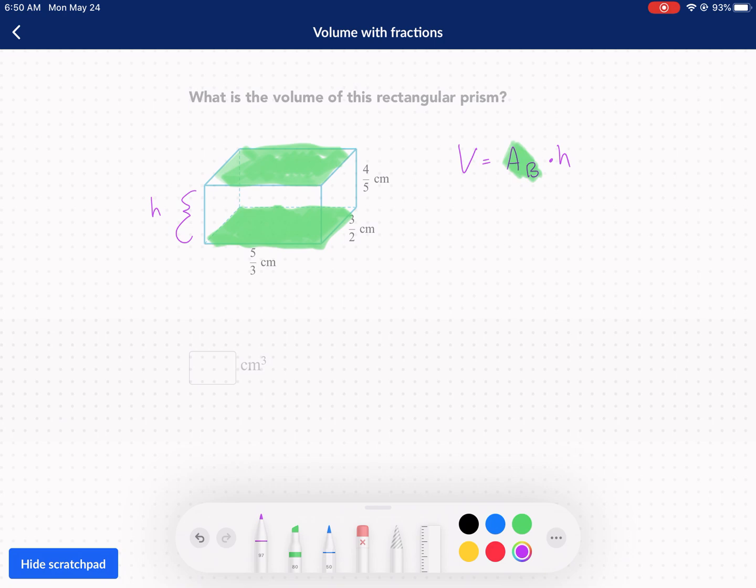Now, the area of the base for a rectangle is just going to be length times width. So essentially we just do length times width times height equals the volume. We're just going to take each one of the dimensions - the height, the width, and the length - and multiply all of them together.